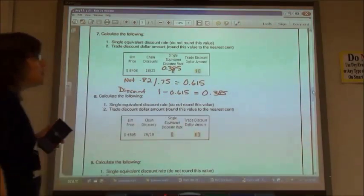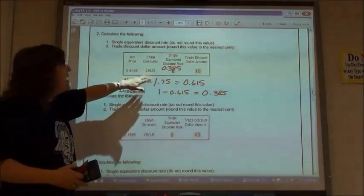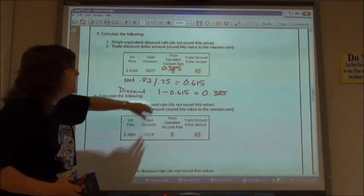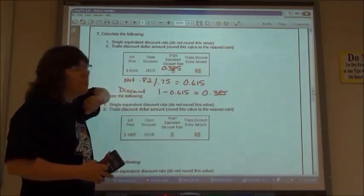In other words, I get a 38.5% discount is equivalent to having an 18% discount and then a 25% discount. We don't write it as a percent, we just write it as the decimal.